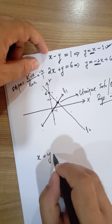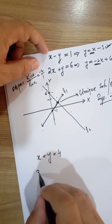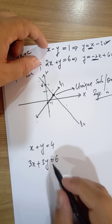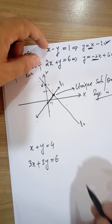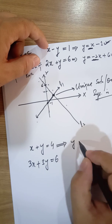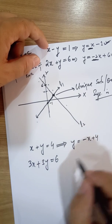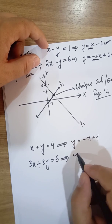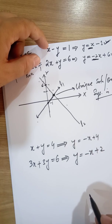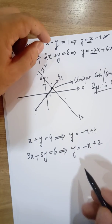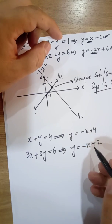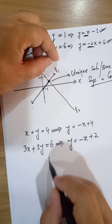Now let's take an example for an inconsistent system. Consider the system: x + y = 4 and 3x + 3y = 6. Let's check whether this system is consistent or inconsistent by transforming these equations into slope-intercept form. We get y = −x + 4 for the first equation and y = −x + 2 for the second (dividing through by 3).